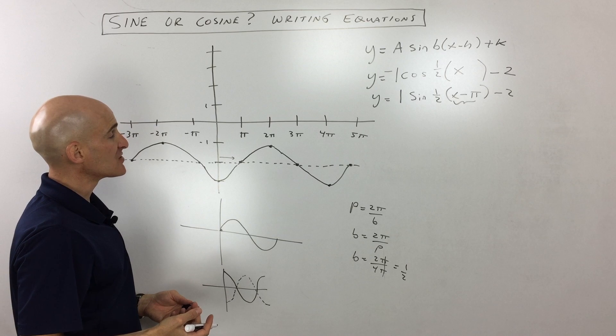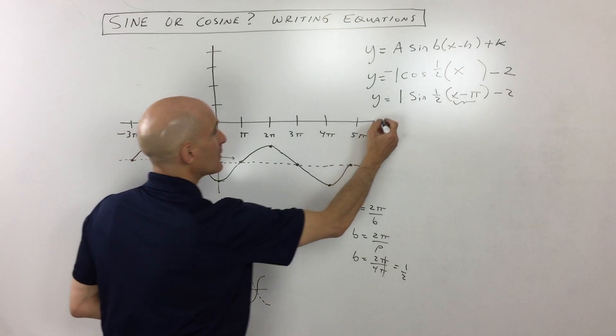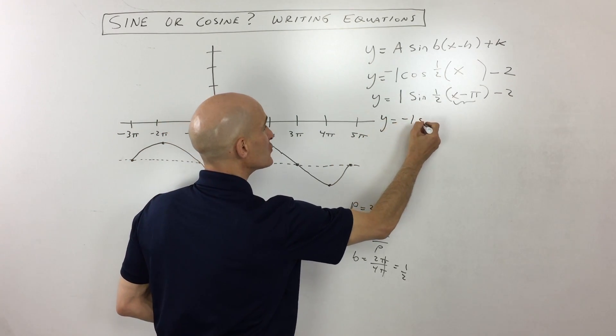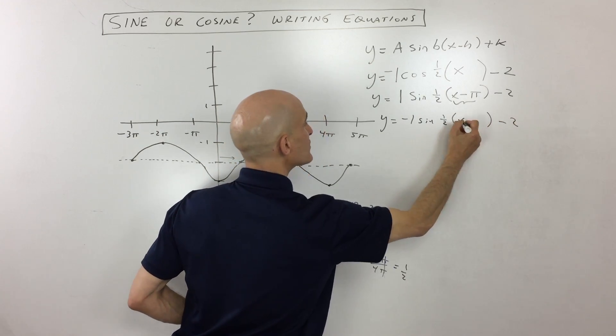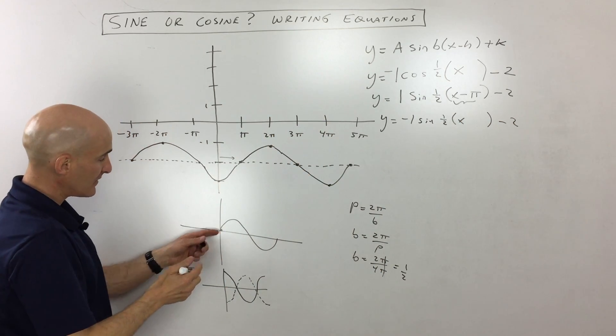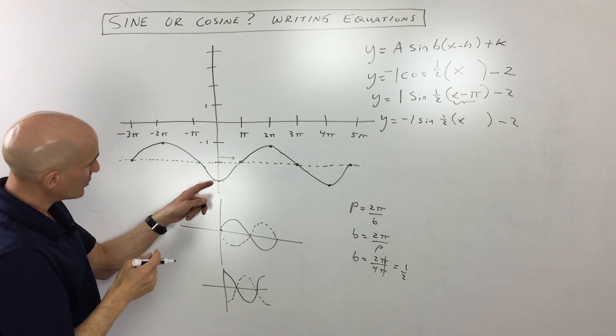Let's take a look at another example. Let's say, for example, we want to do a sine graph, but we want to make it a negative amplitude this time. So all this information here is staying the same. The only thing that's changing is the fact that this is going to be a negative, so it's reflecting over the x-axis.